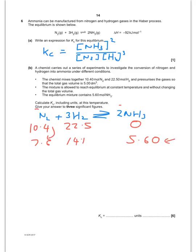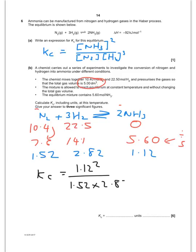Now I need to work out their concentrations. So I'm going to take each of these numbers and divide by 5, because that is the total volume of the chamber. So those are my concentrations now in moles per decimeter cubed. And I have to pop that into my Kc now. So here I go. Kc, just the one at the top, is going to be 1.12 squared divided by the 1.52 times 2.82 cubed. And if you do that, you'll get 0.0368.